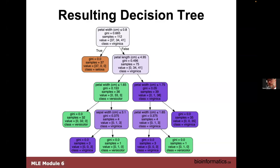Student question: On the last classification, how did sepal width and petal width terminate on each species if they're both less than or equal to the same value? Answer: If it's less than 3.1 it's classified as virginica, and if it's more than 3.1 it's versicolor.